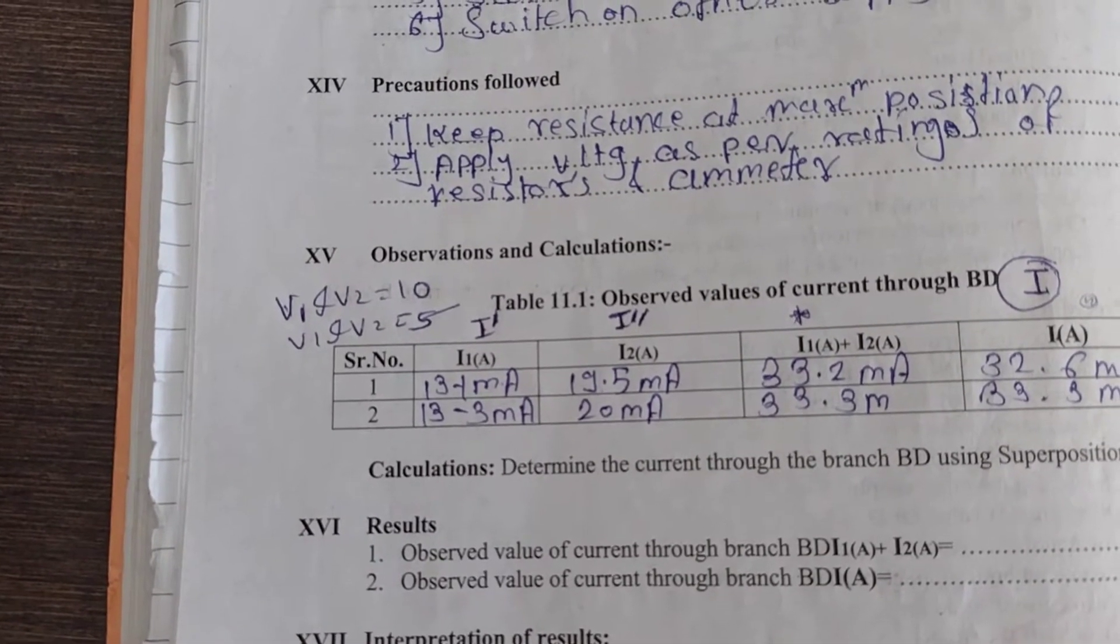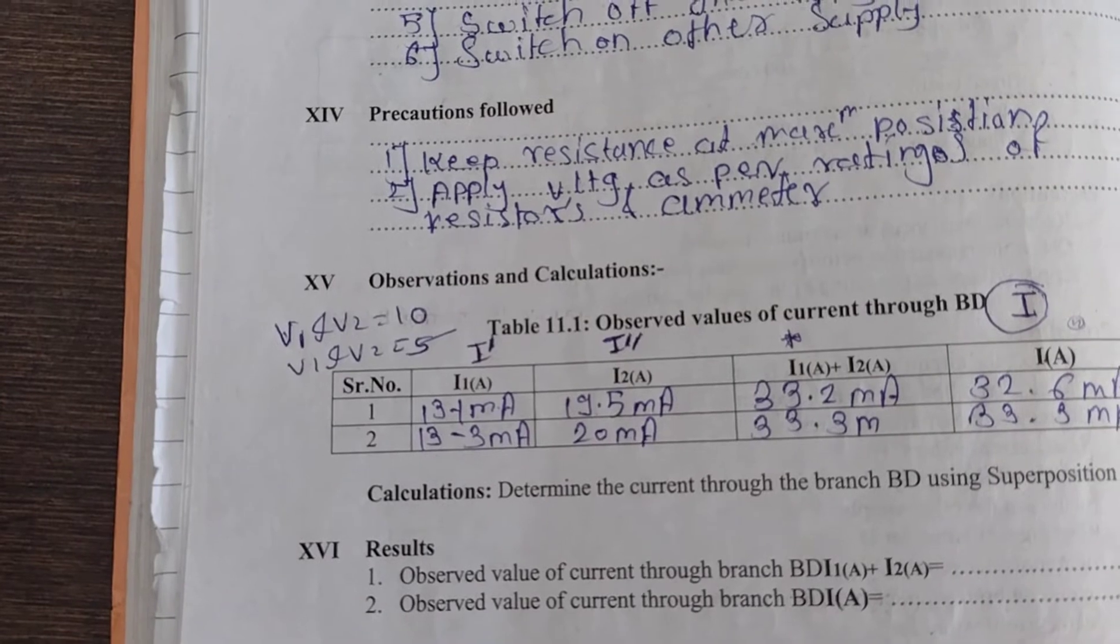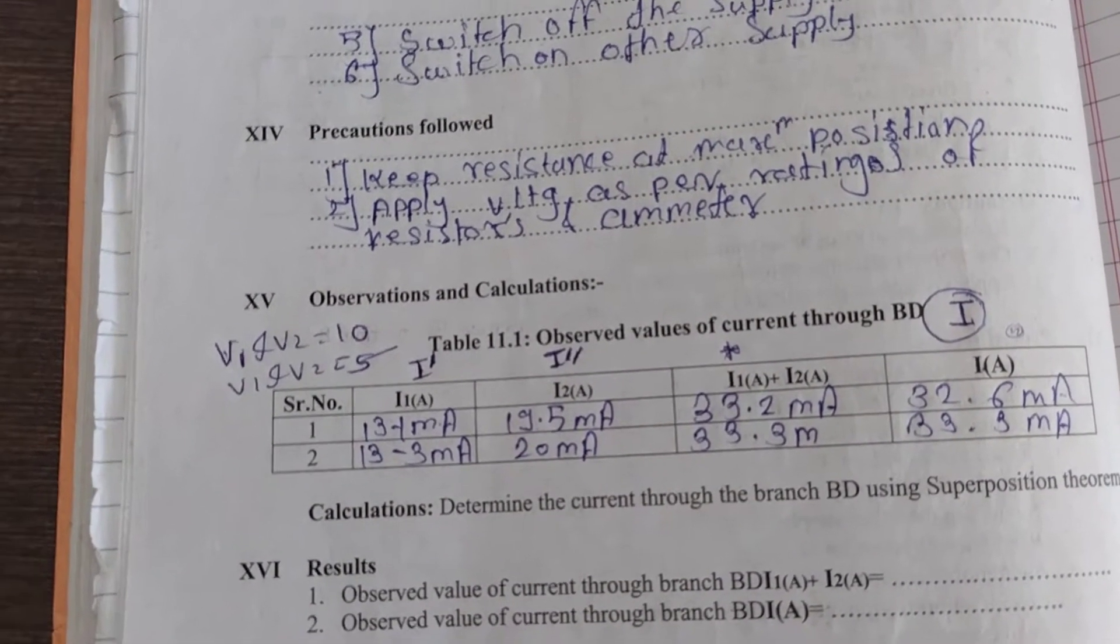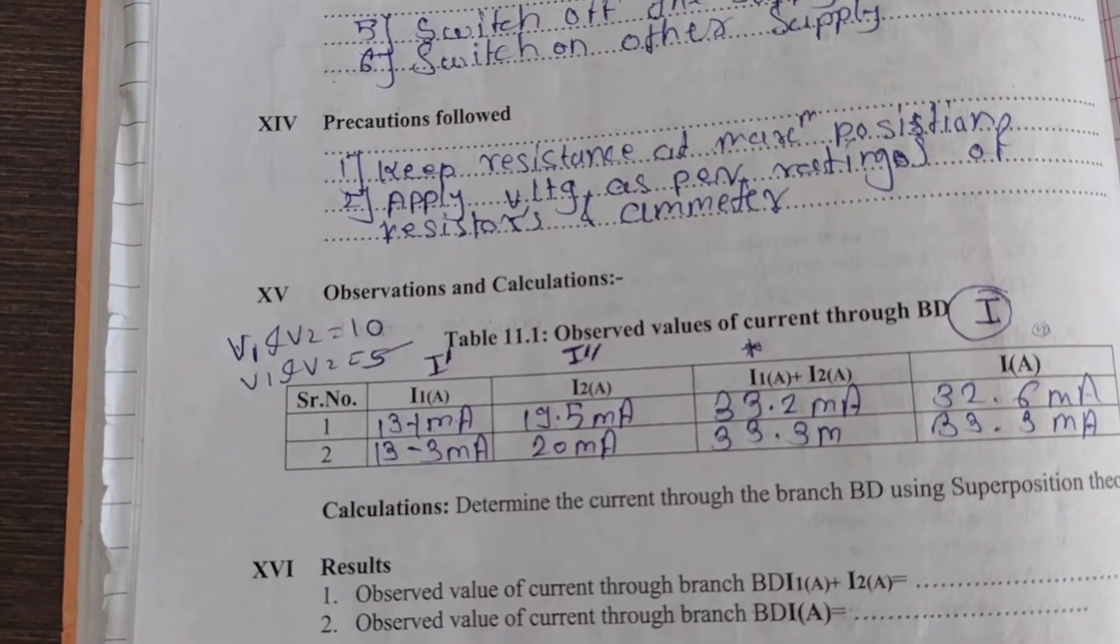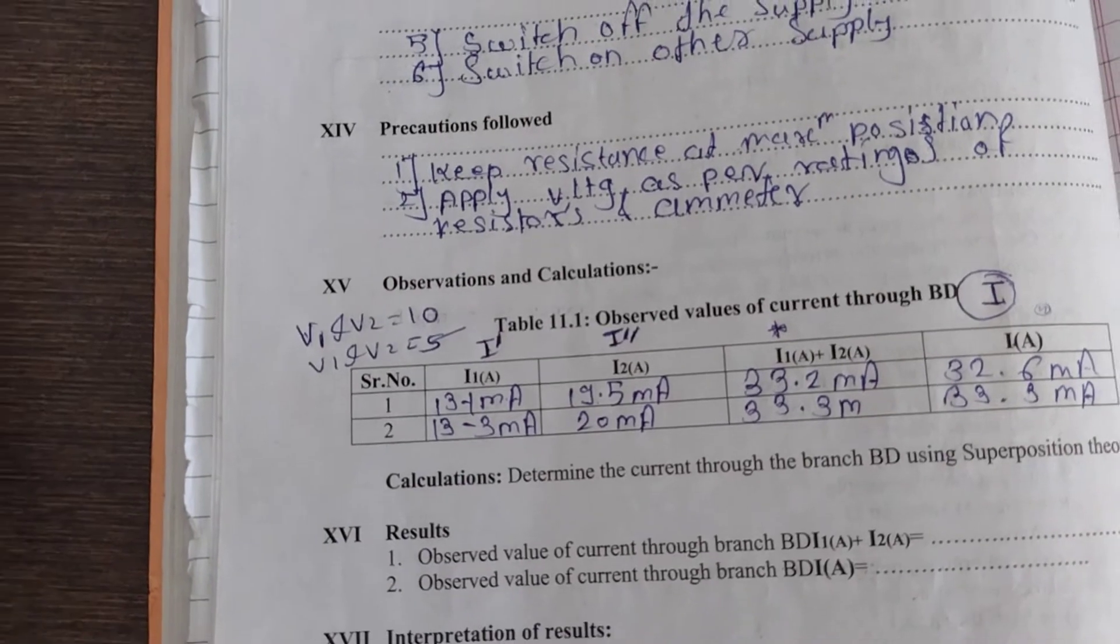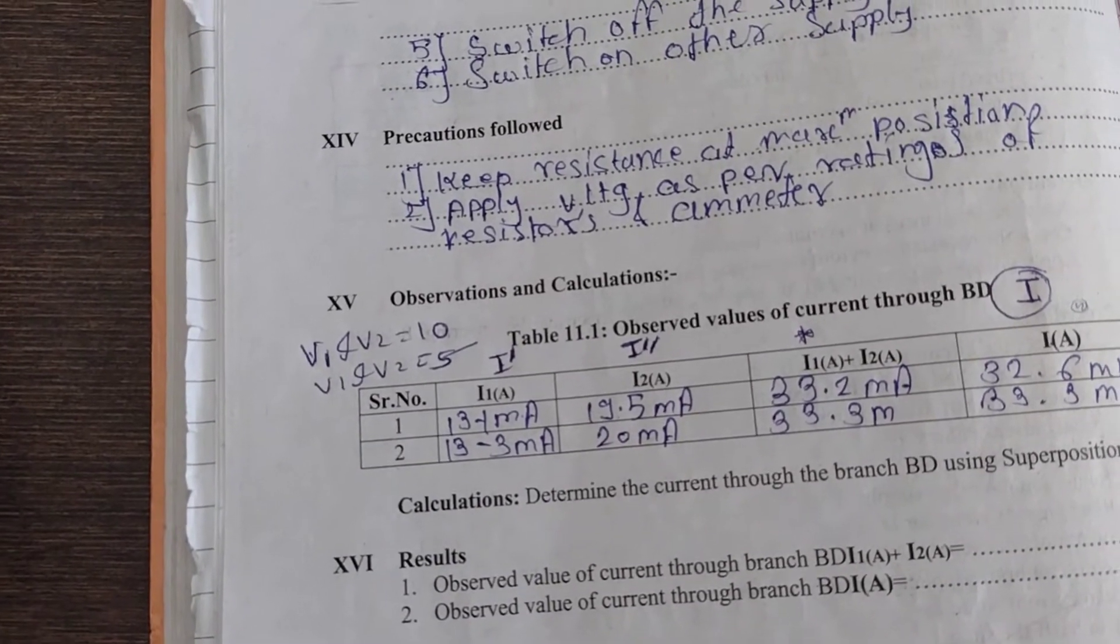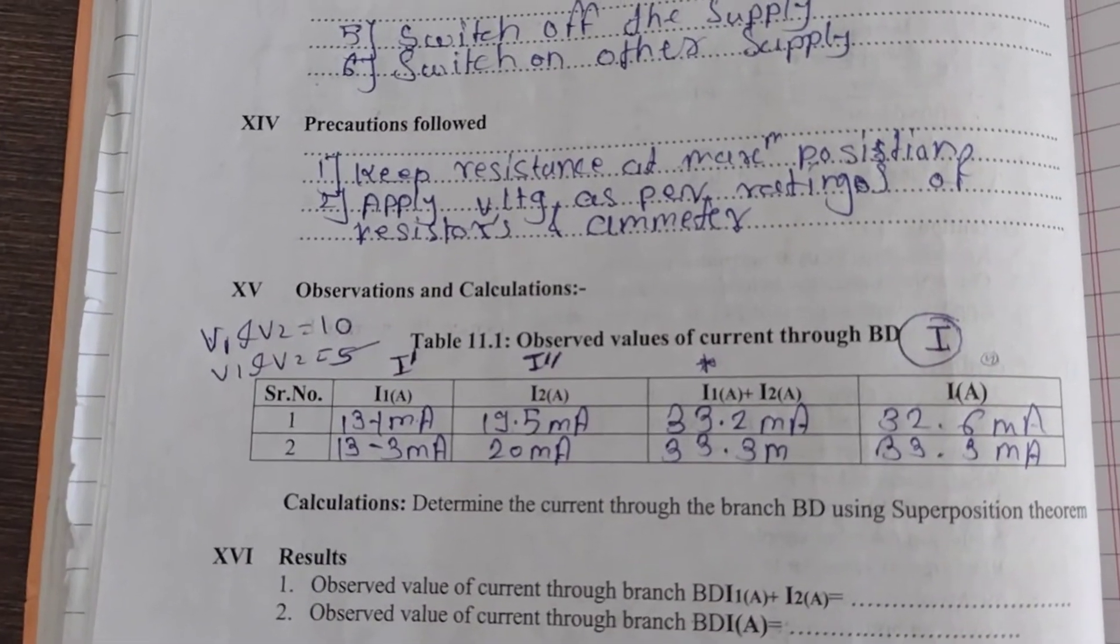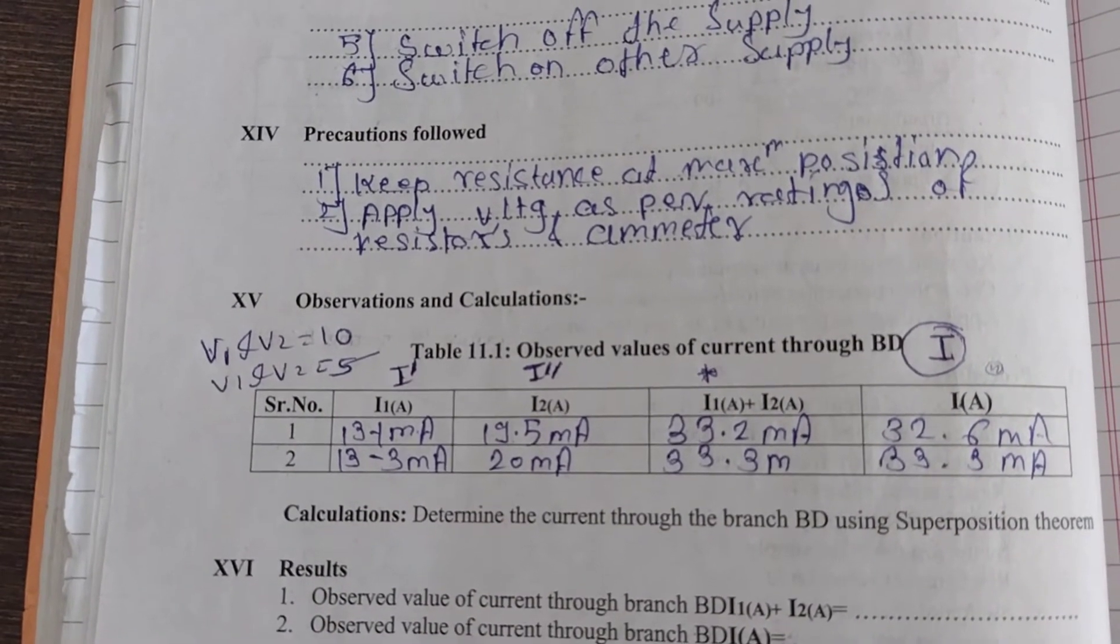we connect V2. Then for total current IA, we connect both V1 and V2. We verify that I1 plus I2 is approximately equal to IA.